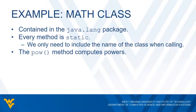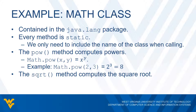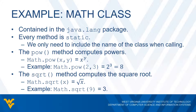Let's take a look at a couple of examples. First, the pow method, which computes powers — we take some number and raise it to another power. The syntax is math.pow(x, y), which computes x to the y power. So if I wanted to compute two to the third power, I can do math.pow(2, 3), which would return eight. Another example is the square root method, sqrt. The syntax is math.sqrt(x), which gives the square root of x. So for example, math.sqrt(9) would compute three.